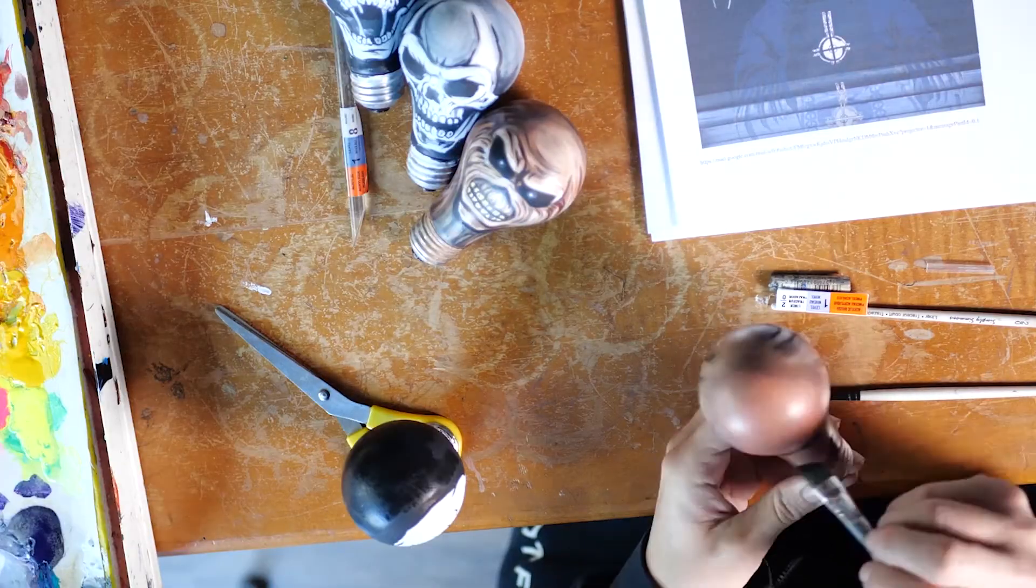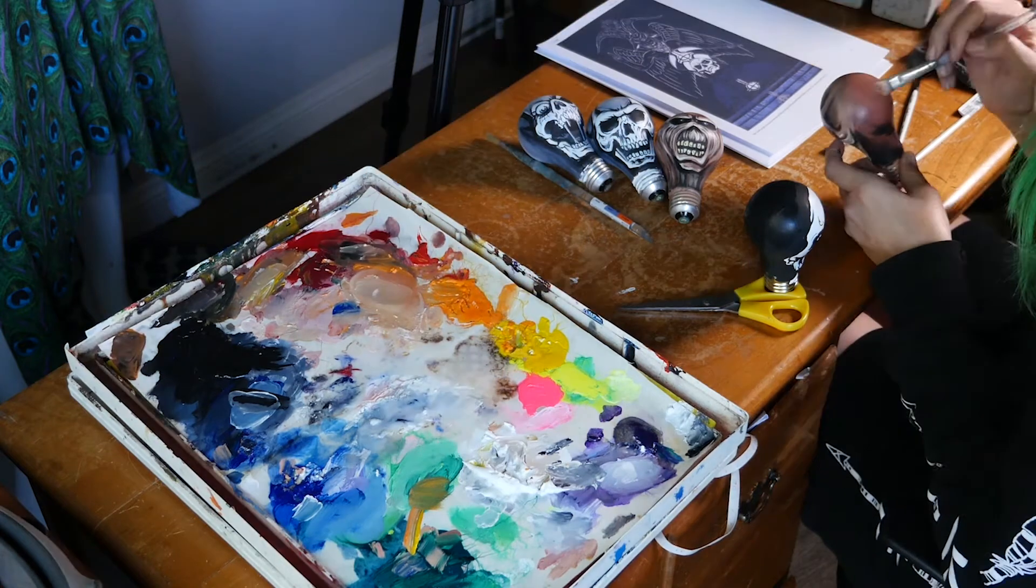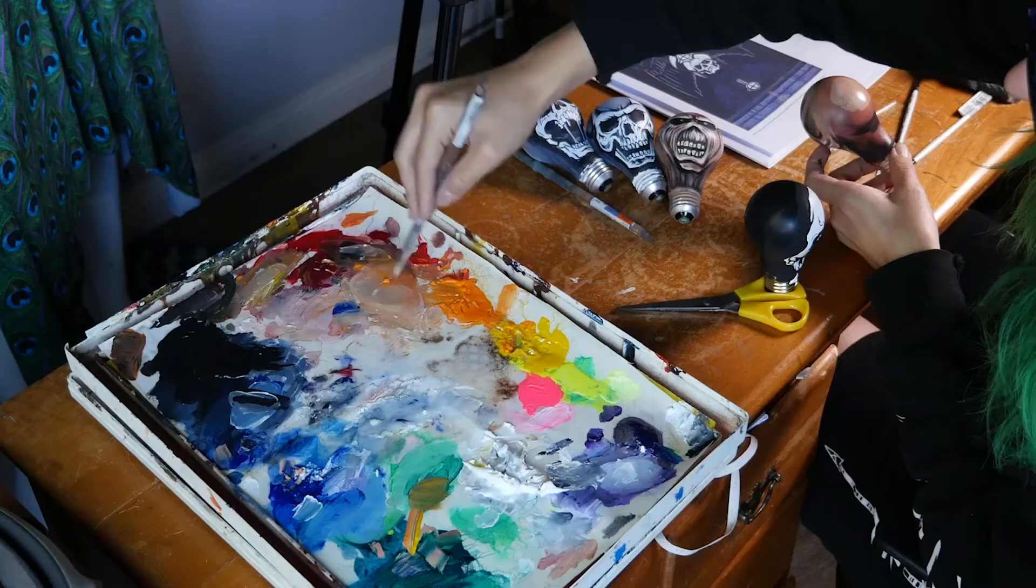Now I'm just going to blend the back of the head. I'm going to block in some black along where the back of the neck is. And then I'm just going to do a circle of the lighter color.